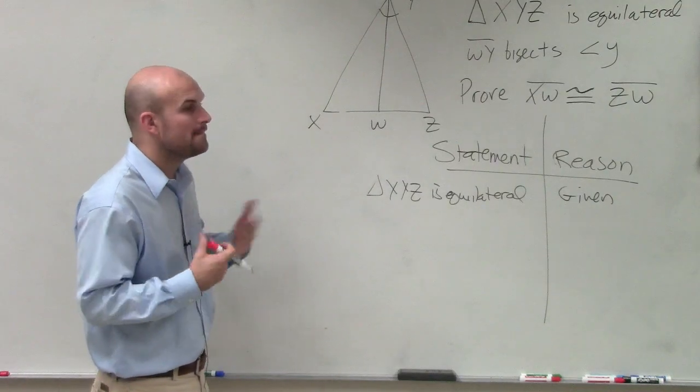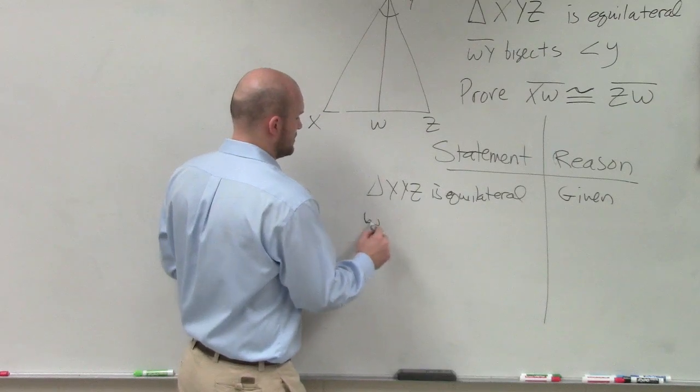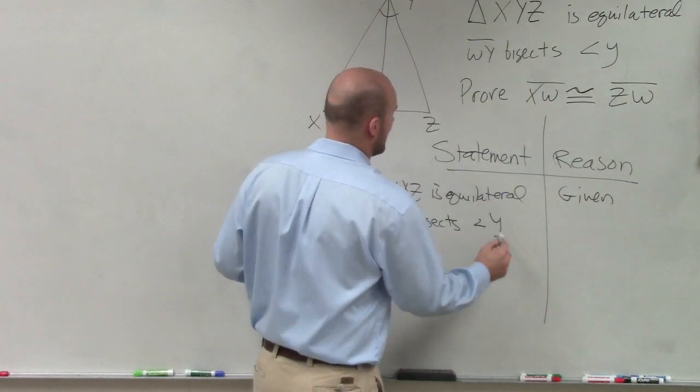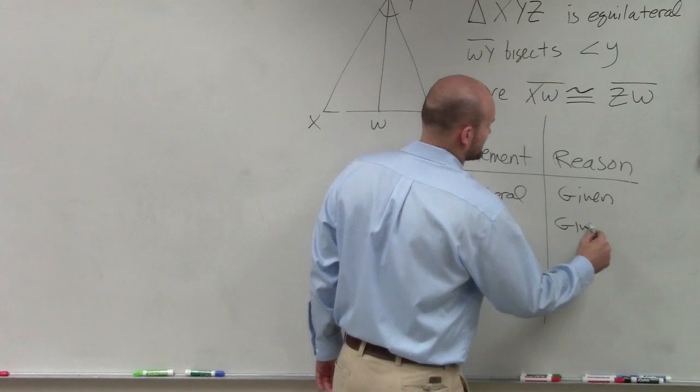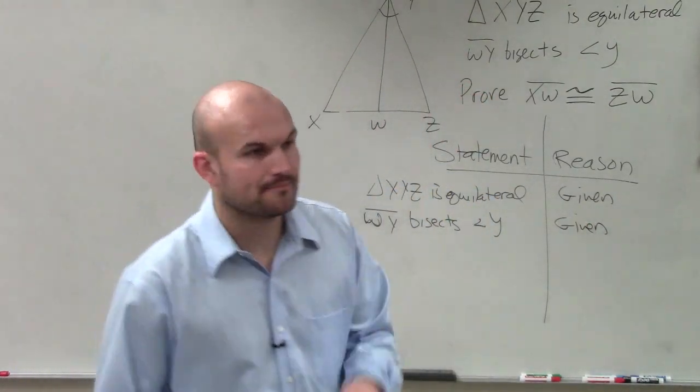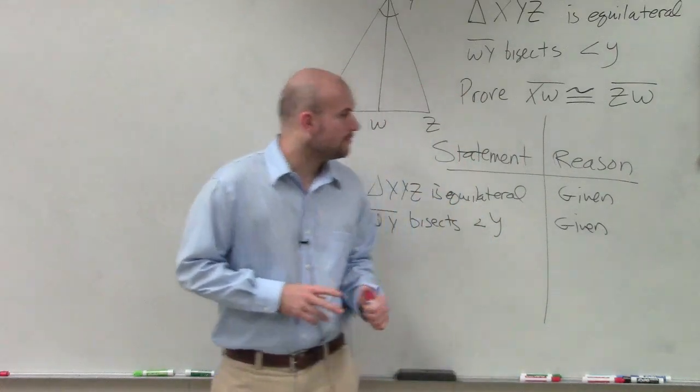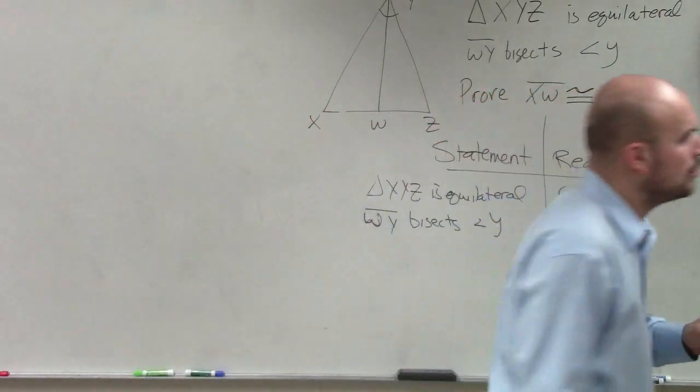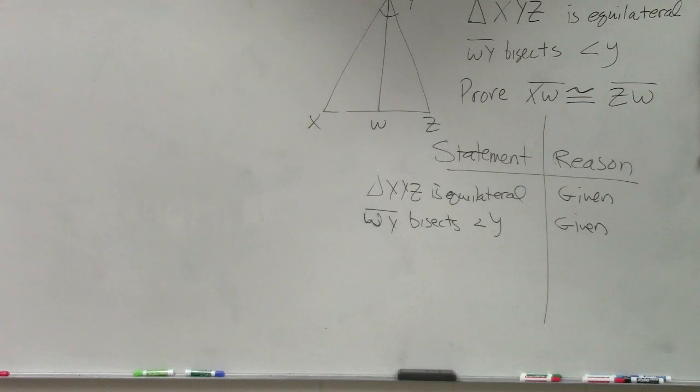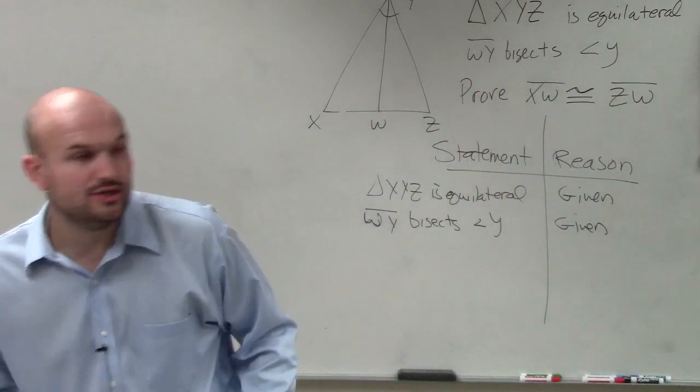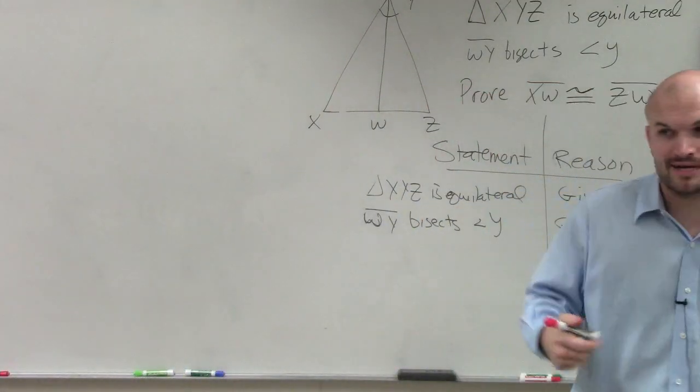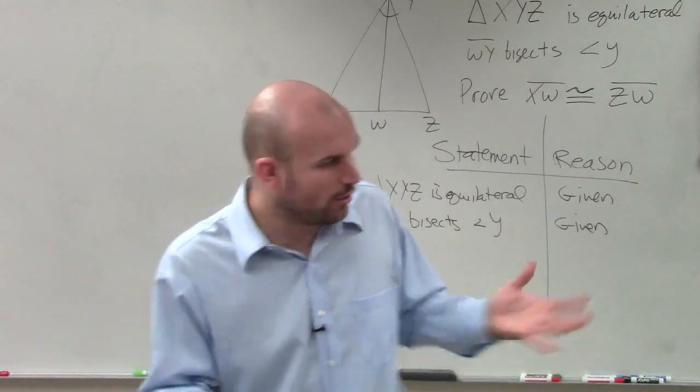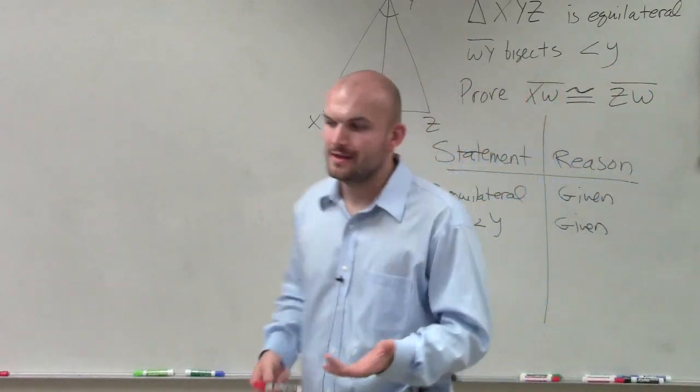The next one, WY bisects angle Y. Why do we know that's true? Because that's given. So we have these two truths, all right? So when you guys are creating, when you guys are constructing your proofs here in the next five minutes, make sure you set up everything so you can have the truths that you're being given. This is going to be the whole basis of our whole argument that we're going to try to make.